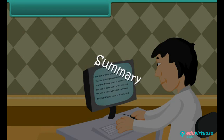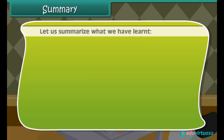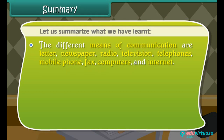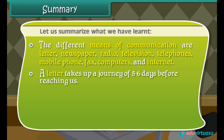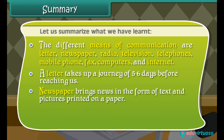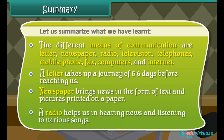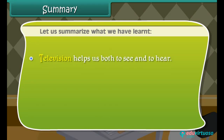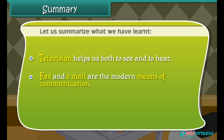Summary. Now friends, let us summarize what we have learnt. The different means of communication are letter, newspaper, radio, television, telephones, mobile phone, fax, computers and internet. A letter takes a journey of five to six days before reaching us. Newspaper brings news in the form of text and pictures printed on paper. A radio helps us in hearing news and listening to various songs. Television helps us both to see and to hear. Fax and email are the modern means of communication.